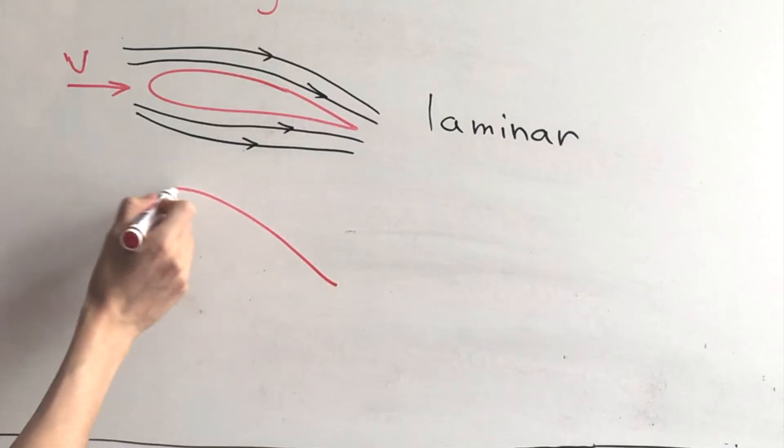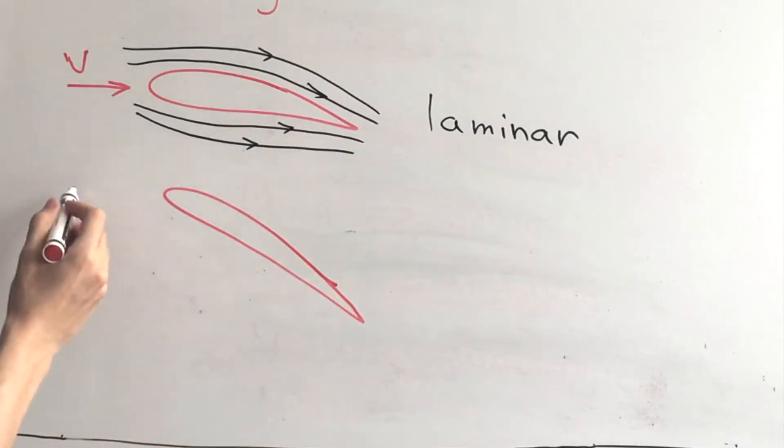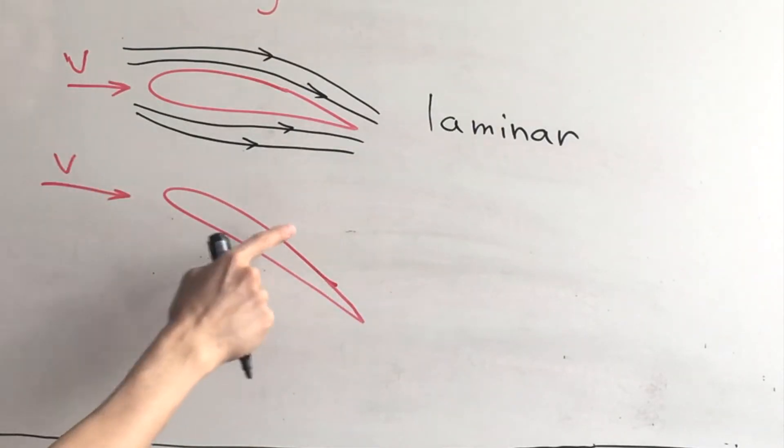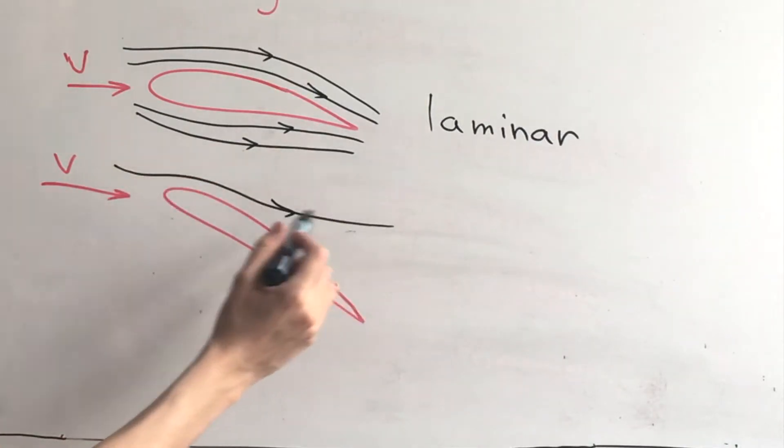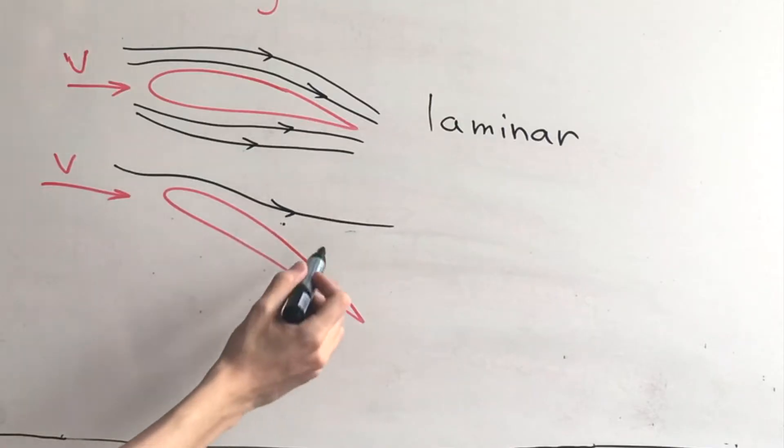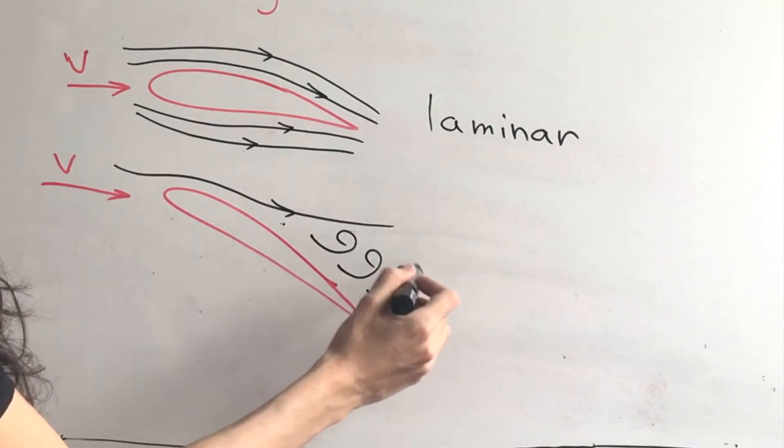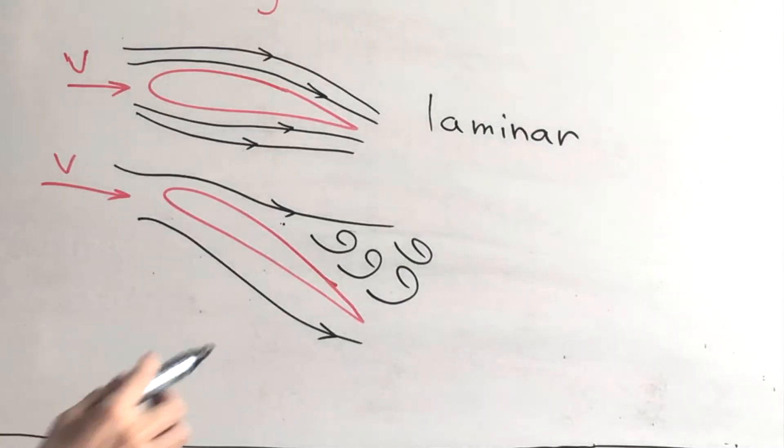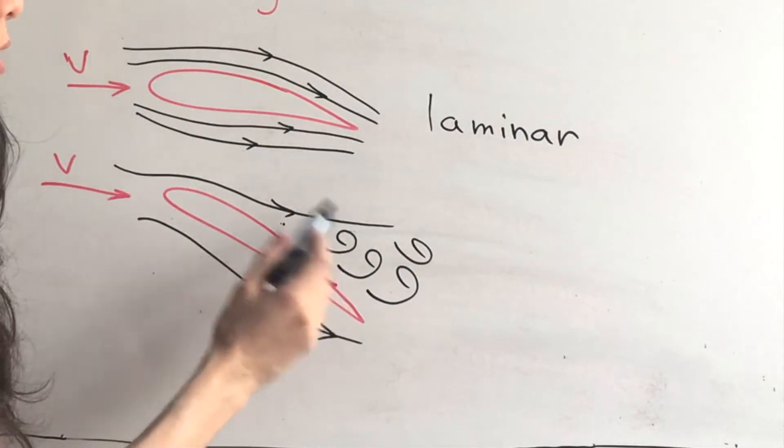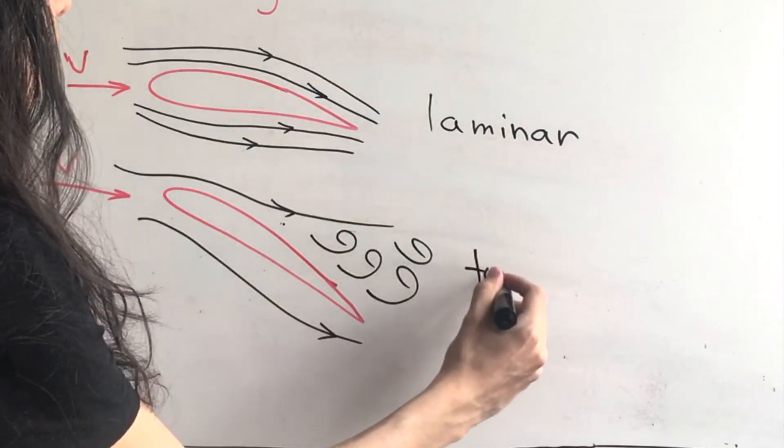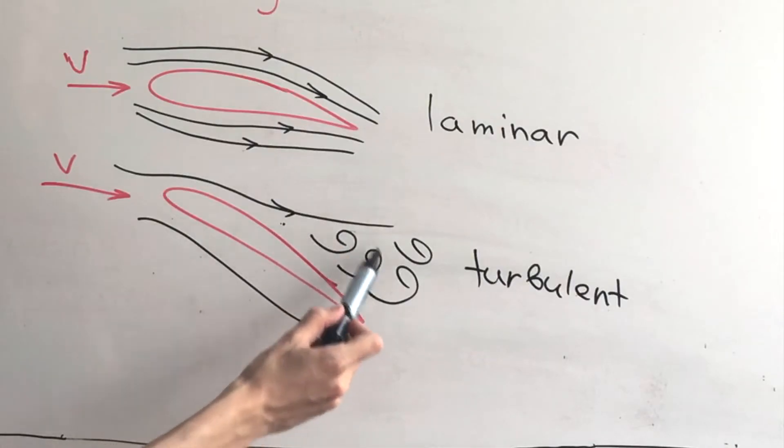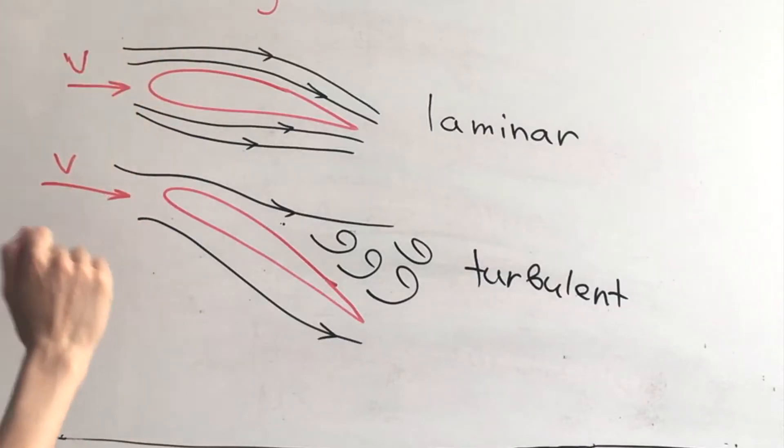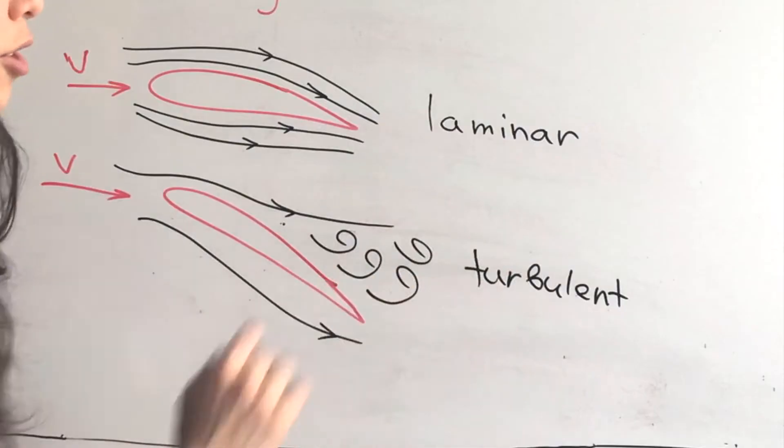But if we have a high angle of attack, then something else will happen in the second half of the airfoil. The streamline will detach at some point, and here we'll have turbulent flow. So basically we're losing lift. But what happens is because Reynolds number changes, this will be the turbulent flow. Because we can't predict the movement of air in this region, Reynolds number can tell us the difference between laminar and turbulent flows.